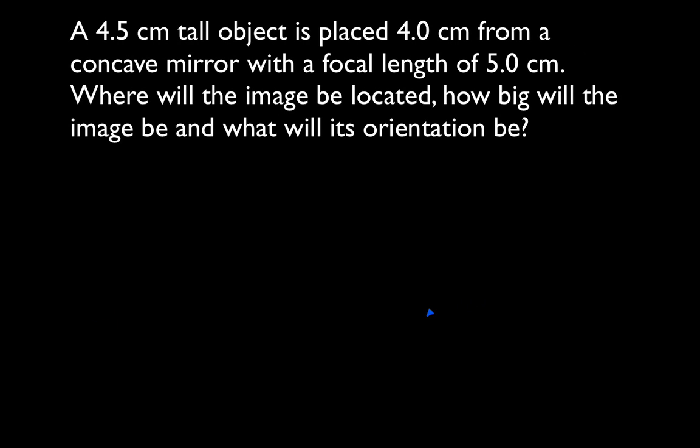Alright, so here's our problem. We have an object that's 4.5 centimeters tall. It's placed 4 centimeters from a concave mirror, and the mirror has a focal length of 5 centimeters. And we're going to write everything down so we can get the image information. Now, I put down here that the focal length is plus 5 centimeters. This is important because it's a concave mirror. Concave mirrors have positive focal lengths. Convex mirrors have negative focal lengths, and we'll do that one next. We want to make sure we write down a negative in that case, but this one is positive.